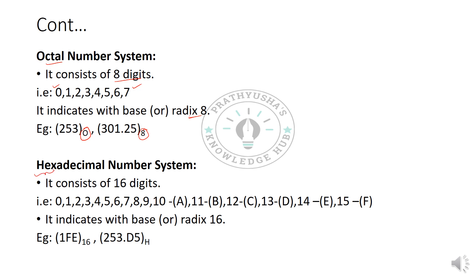Coming to hexadecimal — hexa represents 6 and decimal represents 10, giving a total of 16 digits. The normal decimal numbers 0 to 9 are used as-is, while 10 represents A, 11 represents B, 12 represents C, 13 represents D, 14 represents E, and 15 represents F. The notation for hexadecimal is either base 16 or the letter H. For example, 1FE in hexadecimal represents 1, 15, 14.